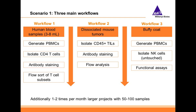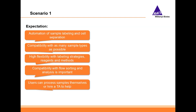Obviously, this is a really busy lab. Their expectations for automating are: automation of sample labeling and cell separation to reduce hands-on time; compatibility with as many sample types as possible — they have PBMCs, dissociated mouse tissue, and whole blood; high flexibility with labeling strategies, reagents, and methods because there are many different sample types that need to be processed in different ways; compatibility with flow sorting and analysis, which is used in many downstream applications; and users should be able to process samples themselves or with assistance from a technical assistant.